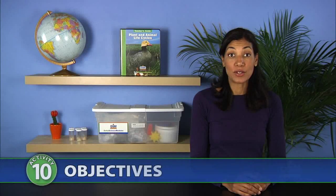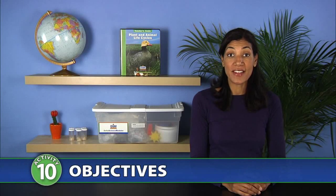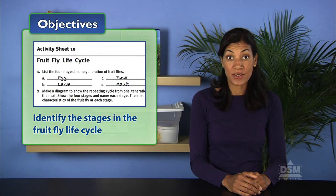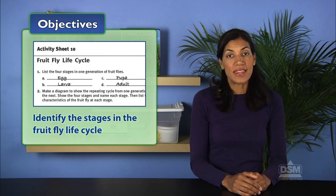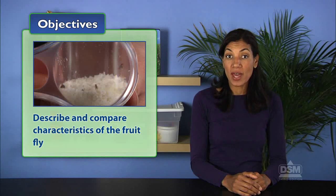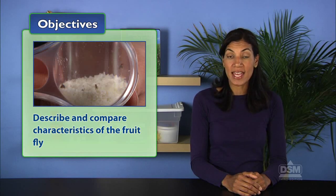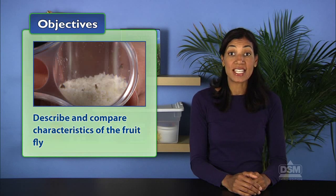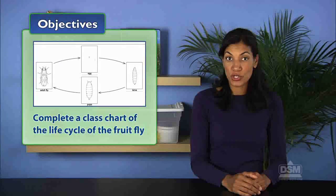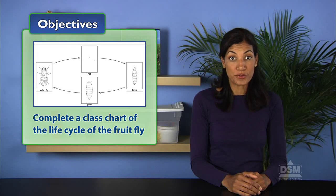In Activity 10, Fruit Fly Life Cycle, students identify the stages in the fruit fly life cycle. They first define metamorphosis, then describe and compare characteristics of the fruit fly at each of the four stages in its life cycle. Finally, students complete a class chart of the life cycle of the fruit fly.